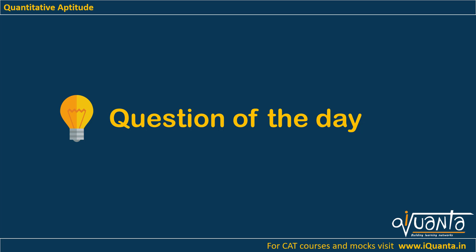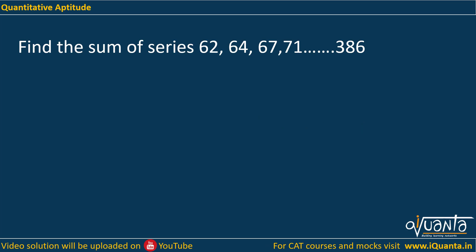Hello everyone, in this video we will try to find out the sum of a series whose difference is in AP. This question is very common in some MBA exams. The series here is 62, 64, 67, 71, and up till 386. We have to find out its sum. Here we can see that the difference is 2, here it is 3, here it is 4, so you can see that the difference is in AP.